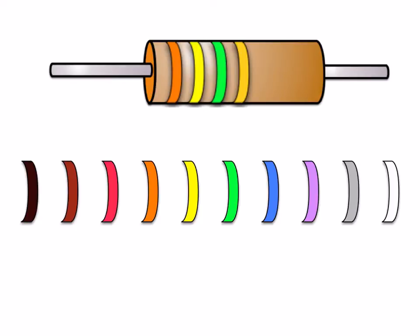Now those colors are going to represent numbers. The colors run from black to white, and black represents zero, brown one, red two, orange three, yellow four, green five, blue six, purple seven, gray eight, and white nine.